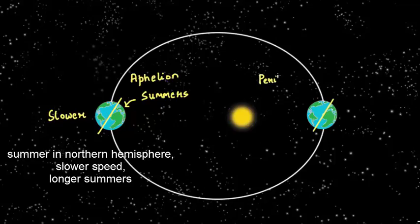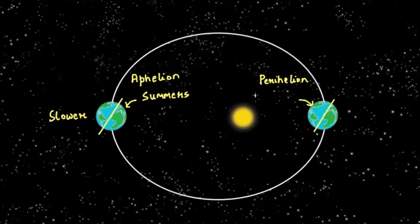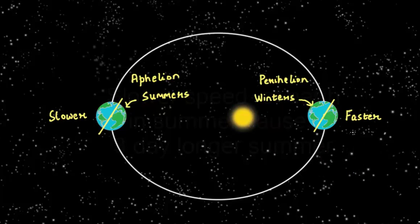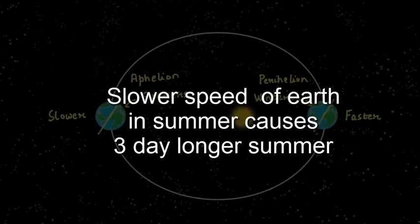Correspondingly, the perihelion or the closest point to sun happens when the northern hemisphere is enjoying winters. Since the speed of the earth around the sun is faster at perihelion, winters in northern hemisphere will be shorter. And that is why 3 days more.